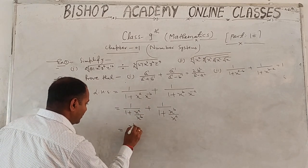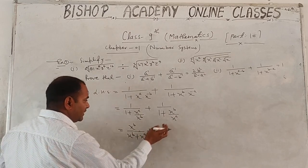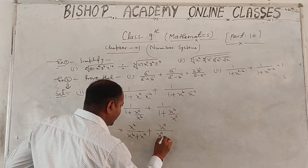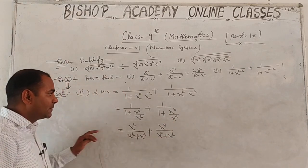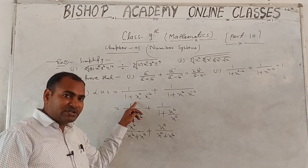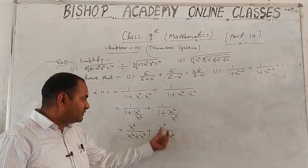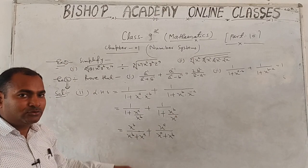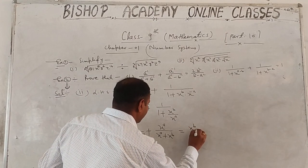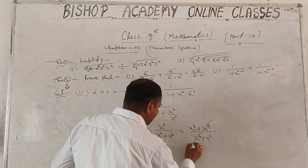Multiplying through: the first term gives x^b / (x^b + x^a) and the second term gives x^a / (x^a + x^b). Both terms now have the same denominator (x^b + x^a). Adding numerators: x^b + x^a upon x^b + x^a.